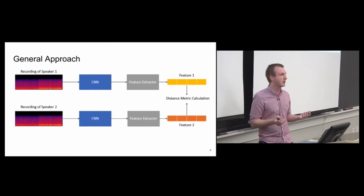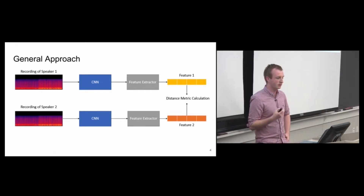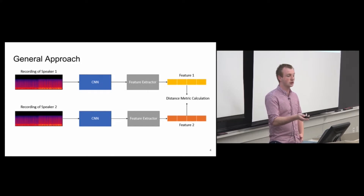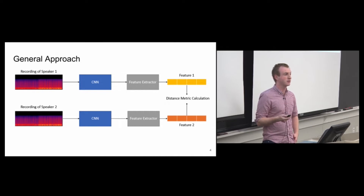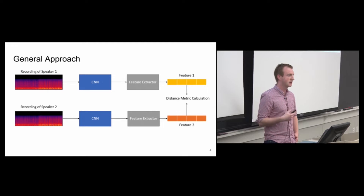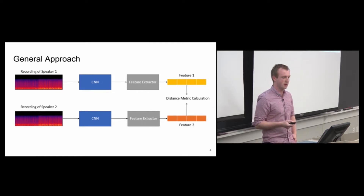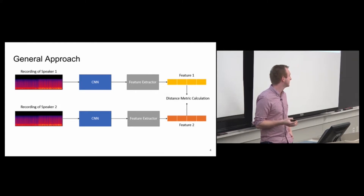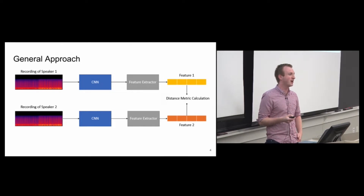Here's a rough outline of the general approach. Two speaker log spectrograms, generally variable length. We're assuming you've already trained this convolutional neural network, and it's going to produce a feature embedding. We're going to use some kind of distance metric — this could even just be Euclidean distance between the two vectors. For well-trained feature embeddings, this should give us a good metric of similarity.